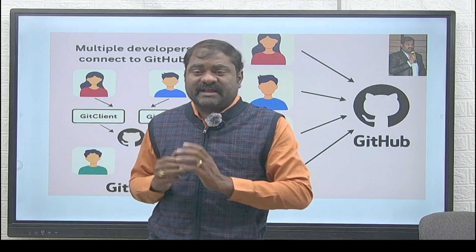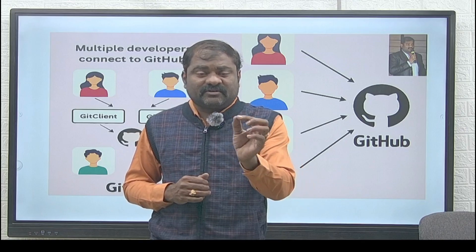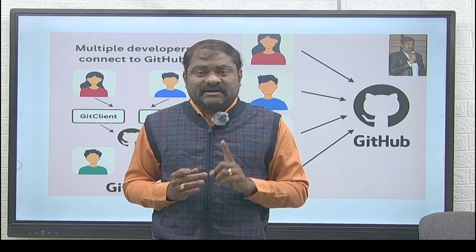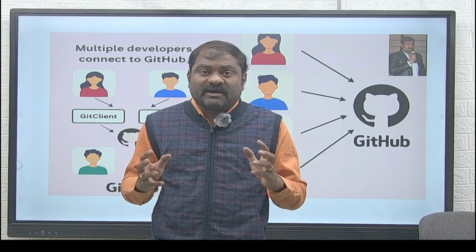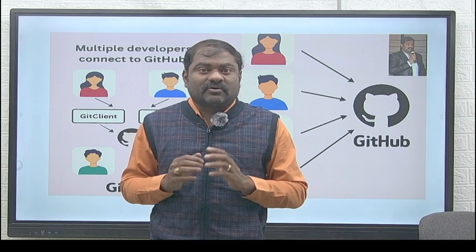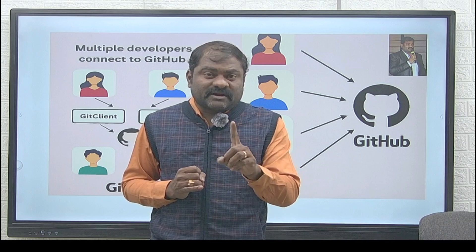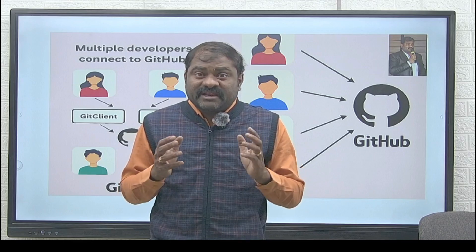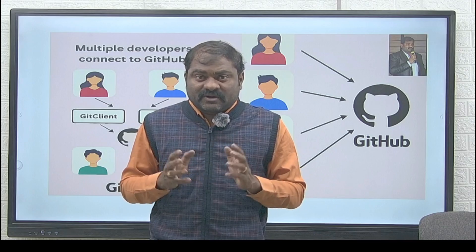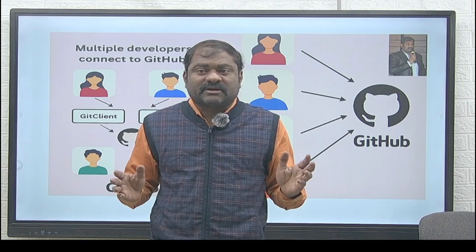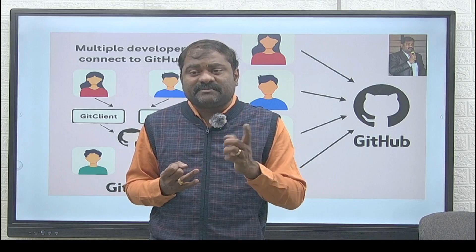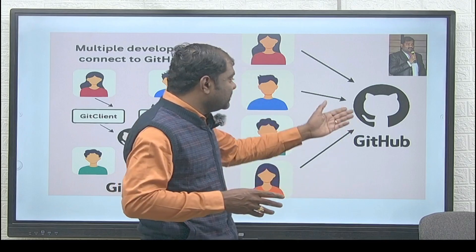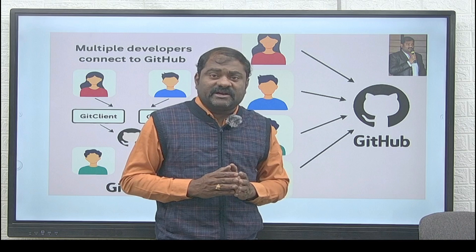In real time, if you keep a file on a server, everyone can access it. Similarly, in the software industry, developers, testers, data analysts, and data scientists all work together with the primary goal of maintaining a particular codebase. One person cannot develop a complete project — it is teamwork. If the code is kept in a common repository, multiple users can connect to it, access it, modify it, and save the changes. That common repository is called GitHub — a cloud repository where we maintain the code.